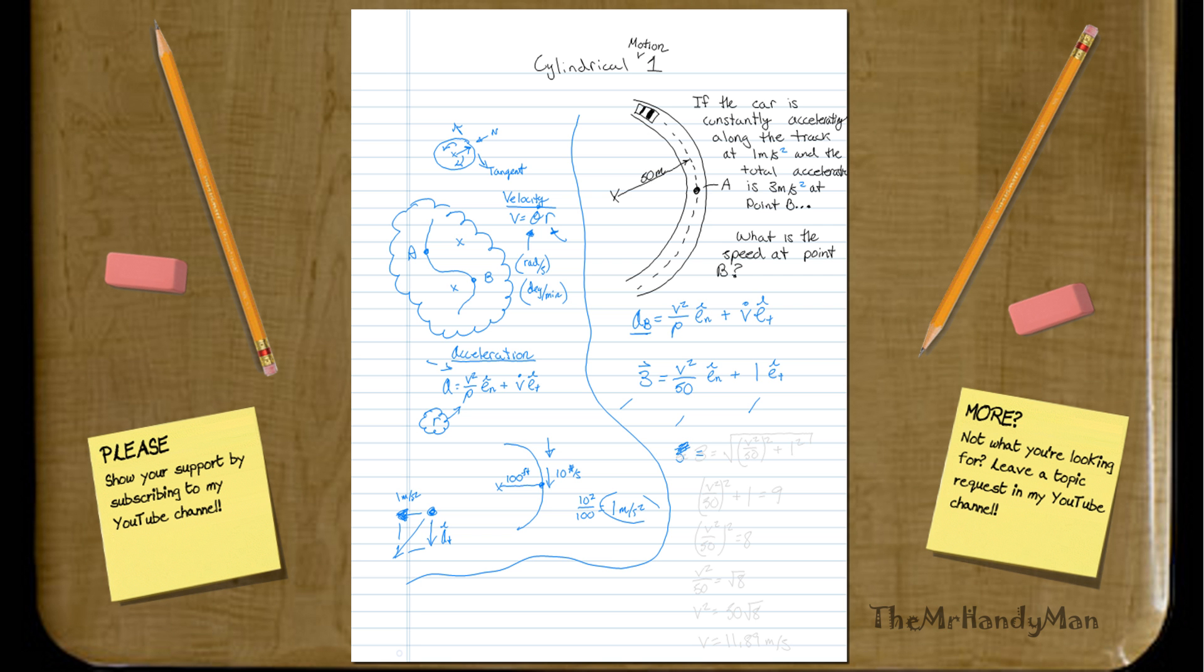and then we know that it will equal V squared all over 50, that whole quantity squared, plus 1 squared. And we know that will equal 3. When we solve for that, you'll have V squared over 50, this whole quantity squared, plus 1 equals 9. Then, V squared over 50 squared equals 8. Then, you've got to take the square root of both sides, so that would be V squared over 50 equals square root of 8.